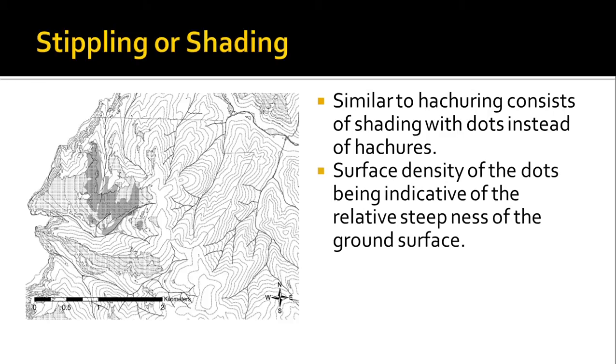And the surface density of the dots being indication of the relative steepness of the ground surface. If the dots are denser, then the ground will be steeper. If the dots are sparse, then the ground will be gentler. This consists of the same drawback - there is no actual elevation of the surface, and you cannot enter any additional data.